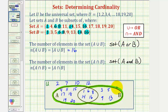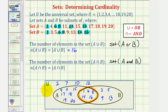Now for the second question: we want to determine the number of elements in A intersect B, the cardinality of A intersect B, which is the number of elements in A and B — the number of elements in this region here. Notice there are five elements in this intersection. Therefore, the cardinality of A intersect B, or the number of elements in A intersect B, is five. I hope you found this helpful.